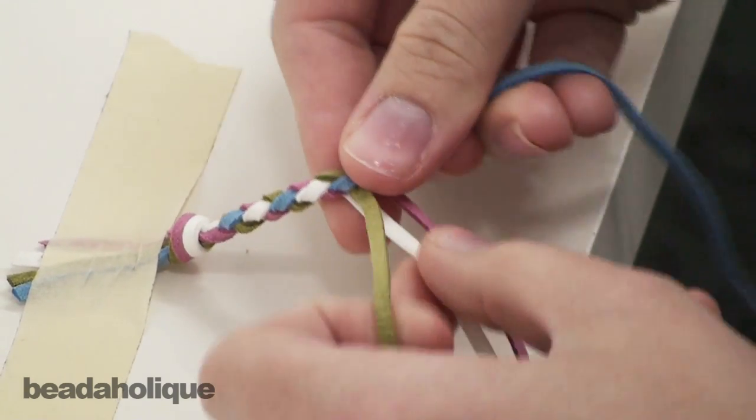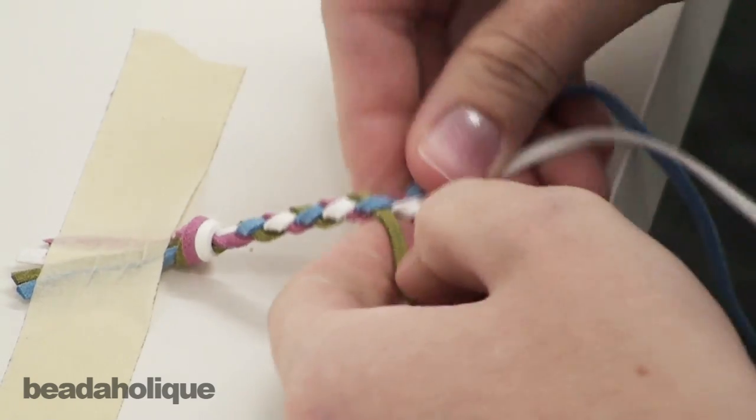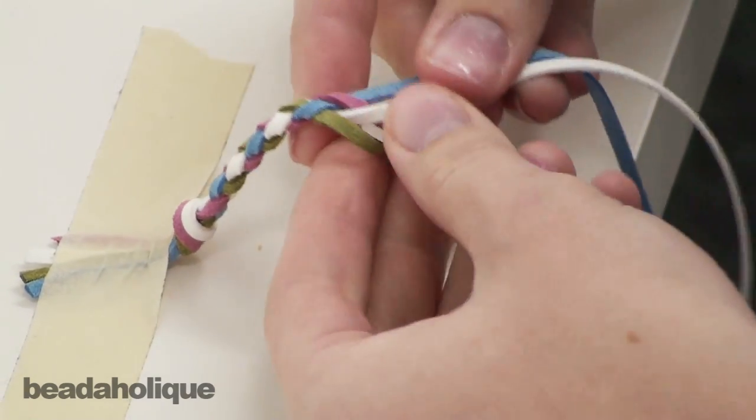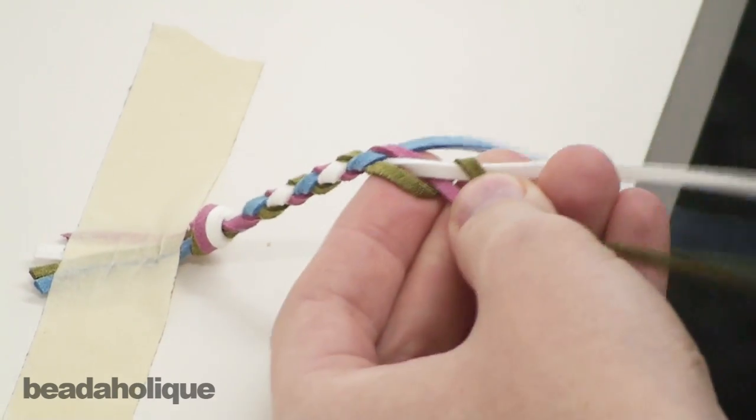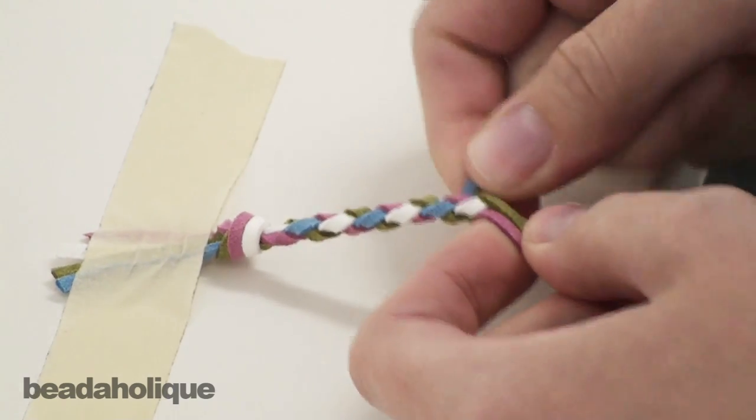Just keep going. Over two and then back one. Left piece over two and back one. And it does look nicest when it's pulled pretty tight.